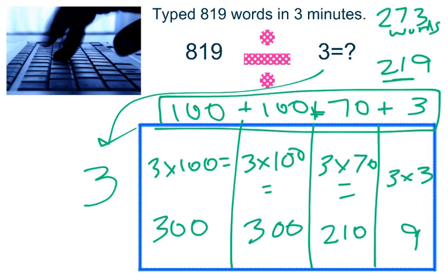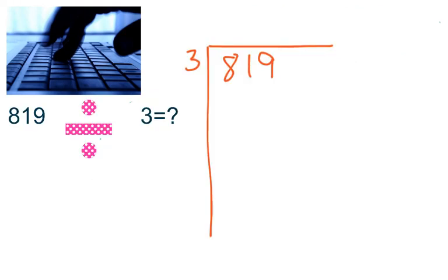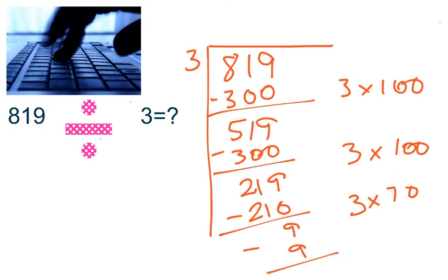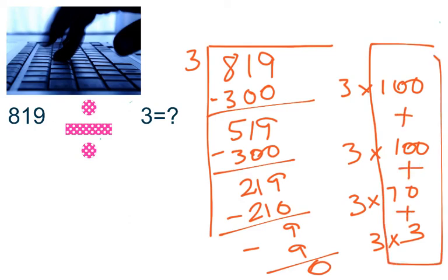Just as in the previous examples, we're going to look at it in a longer form. So now I'm thinking, what can I pull out of 819? Well, I know I can pull out 300, just like I did before. And 300 is simply 3 times 100. And I'd be left with 519. I can pull out another 300, which again is 3 times 100. And I would be left with 219. From here, I can pull out 210, which is simply 3 times 70. And I would be left with 9. And my last step is to pull out 9 because that's simply 3 times 3. And I'd be left with 0. So now my partial quotients would be 100 plus 100 plus 70 plus 3, which is 273 words per minute.